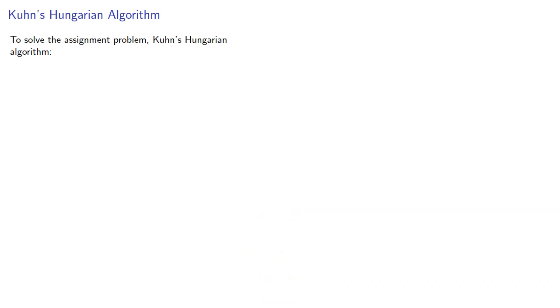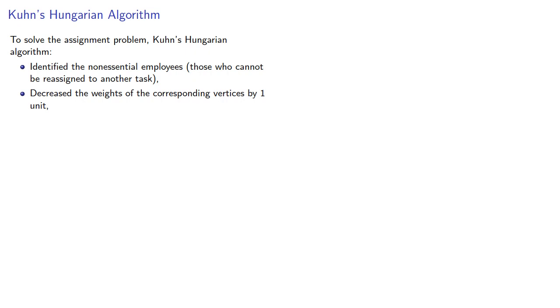To solve for the assignment problem, Kuhn's Hungarian algorithm identified the non-essential employees, those who cannot be reassigned to another task, decreased the weights of the corresponding vertices by one unit, and increased the weights of the adjacent vertices by one unit.